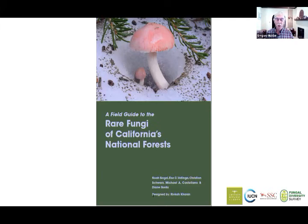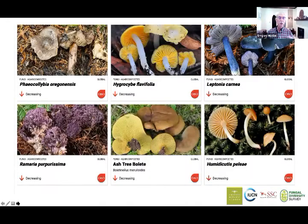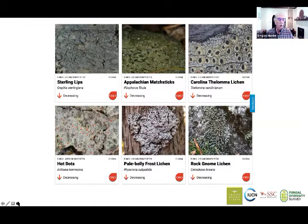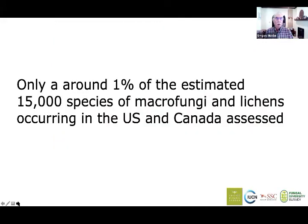There's been some other progress. For example, this book done by Noah and colleagues — a field guide to rare fungi of California national forests — and NatureServe was instrumental in getting this done, so thank you very much. Progress is being made. Here are some of the fungi on the global red list that are endemic North American species. Here are some of the mushrooms — and you can see they're not little brown mushrooms, these are really bright, showy things, some of them mycorrhizal, some decomposers. And here are some of the lichens on the global list — again, some big showy lichens. But remember, that's only about 1% of the estimated 15,000 species of macro fungi and lichens estimated to occur in the United States. So only 1% have been assessed — we have a lot more work to be done.